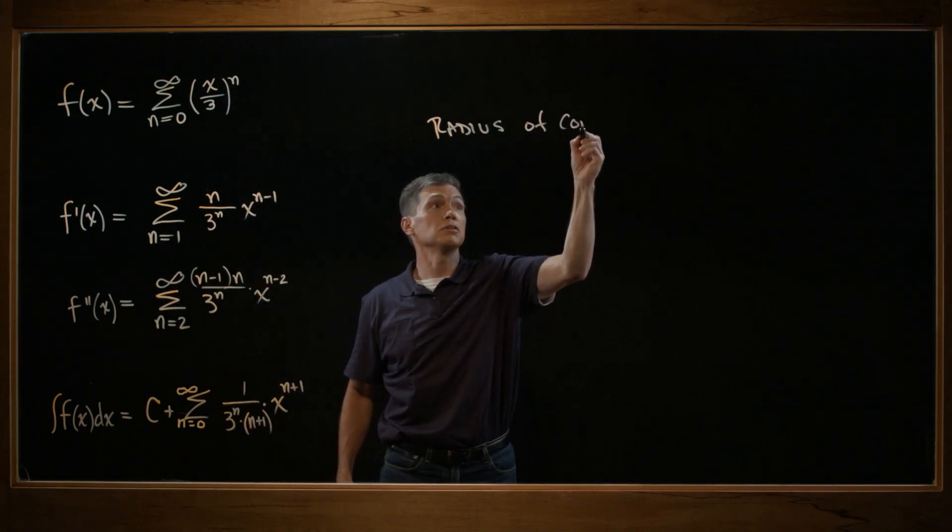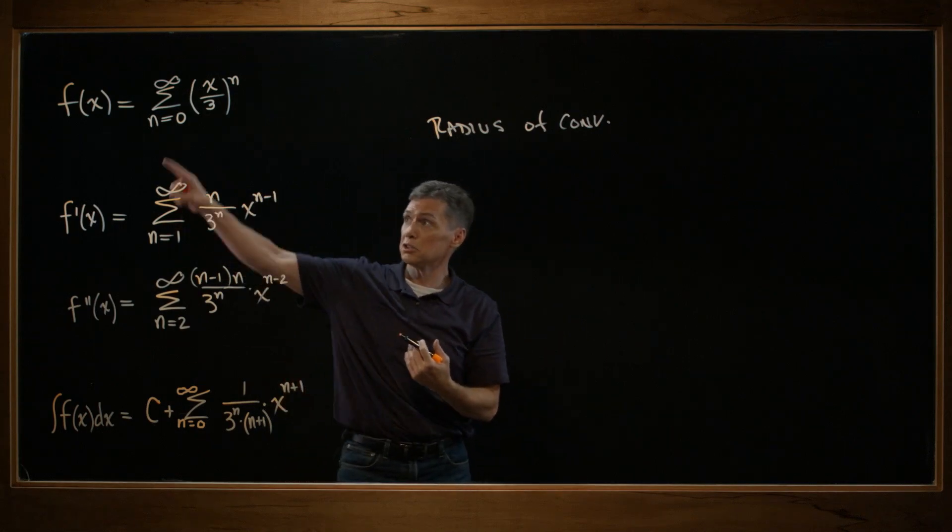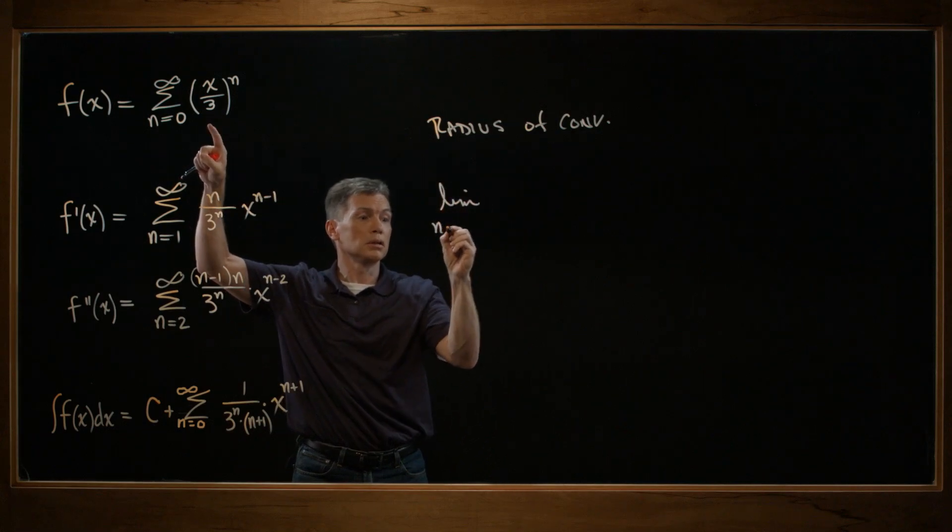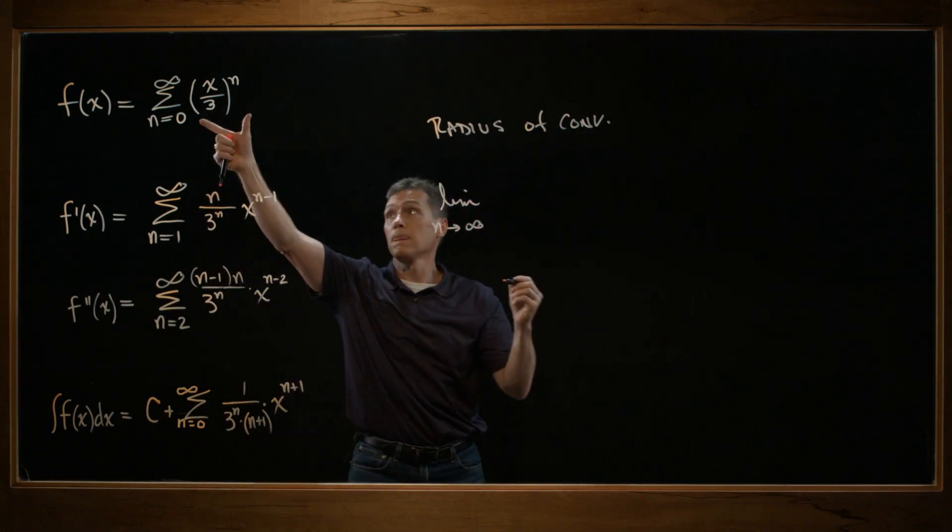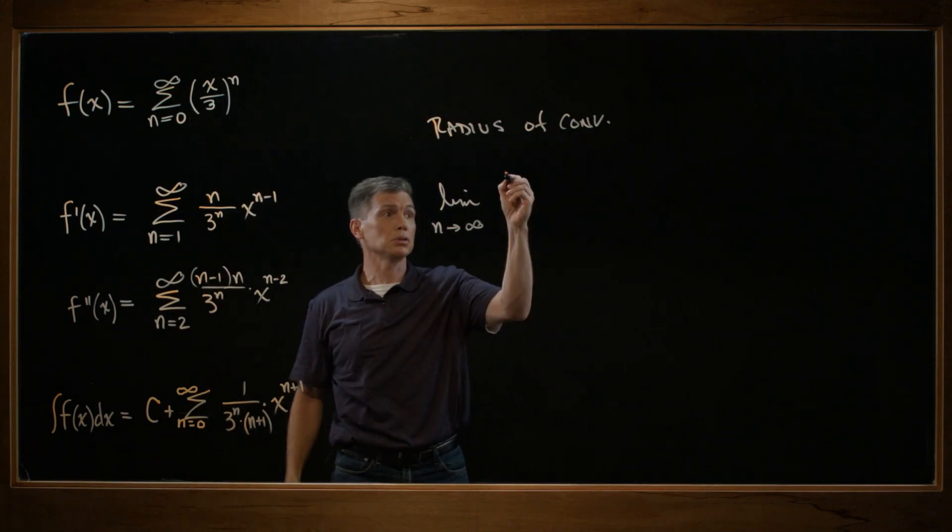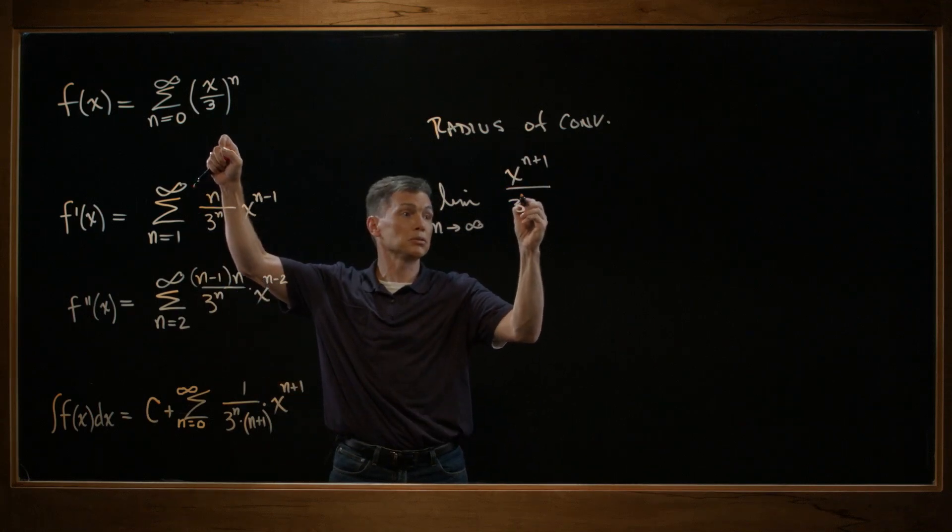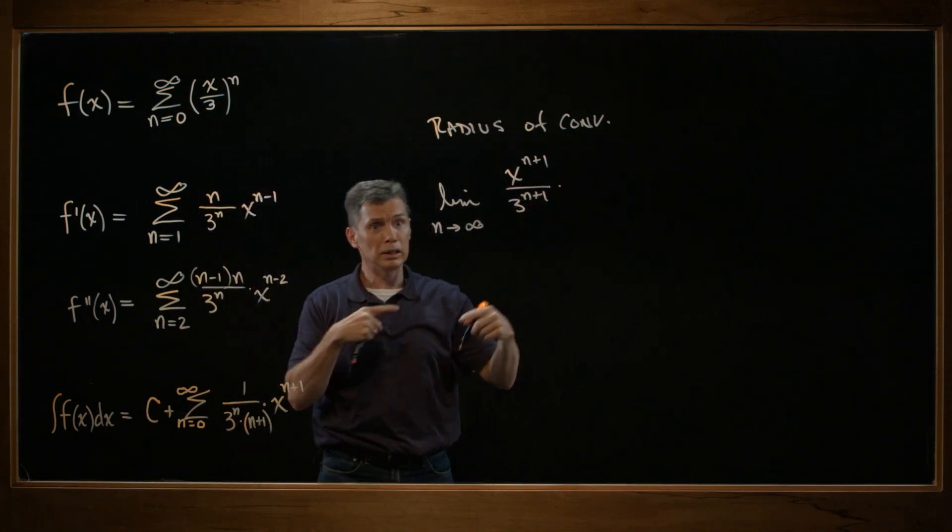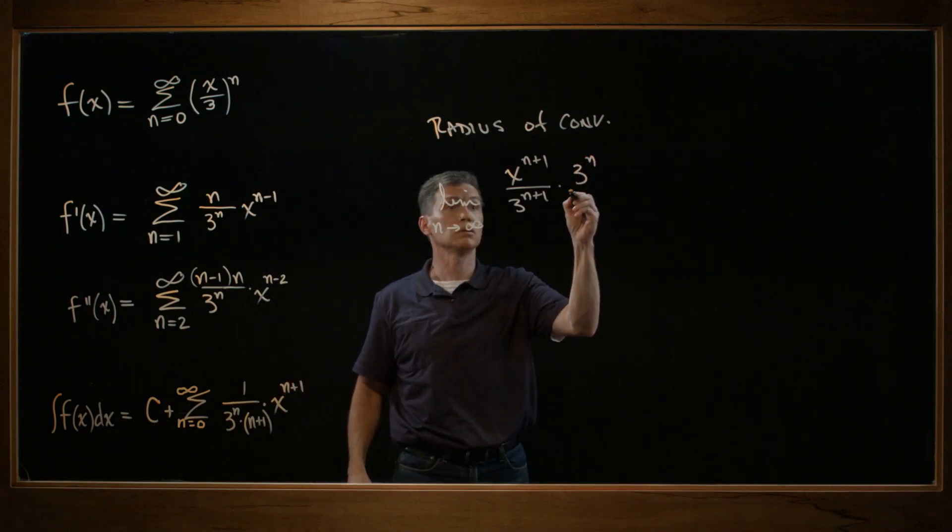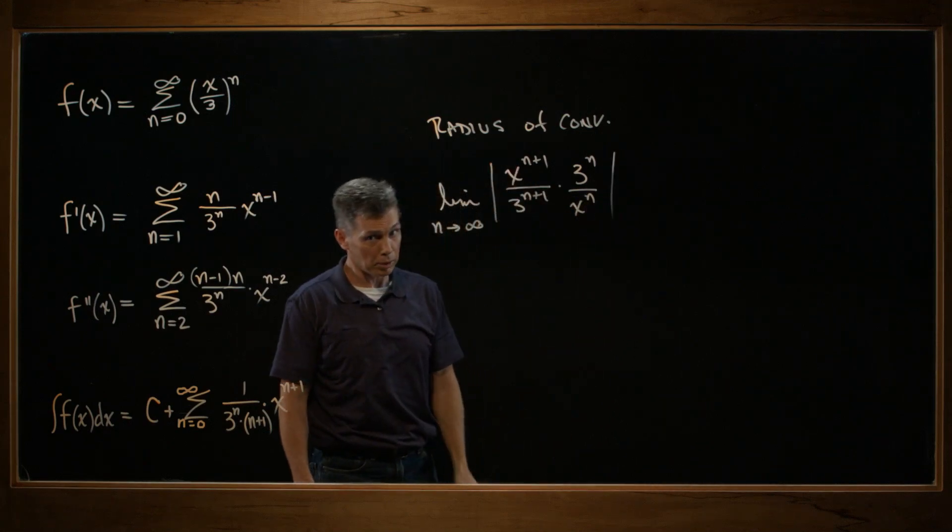Radius of convergence, which you've done problems before with finding the radius of convergence. We're going to go to this expression and look at the limit as n goes to infinity of the n plus 1 term divided by the nth term. So x raised to the n plus 1 divided by 3 raised to the n plus 1. Divide, but it's a fraction, so I'll flip and multiply and get 3 to the n over x to the n. And that's all within absolute value bars.